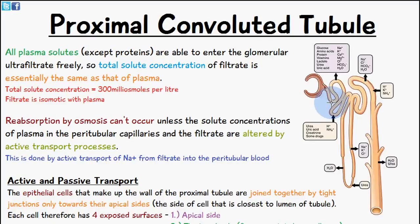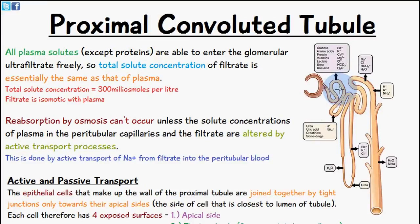Reabsorption by osmosis cannot occur unless the solute concentrations of plasma in the peritubular capillaries and the filtrate are altered by active transport processes. The glomerular capillaries receive blood via an afferent arteriole, which leads away via an efferent arteriole that eventually forms the peritubular capillaries wrapping around the nephron tubules. So reabsorption by osmosis can't occur if the tubular fluid is iso-osmotic with plasma; we must alter the filtrate by active transport processes.